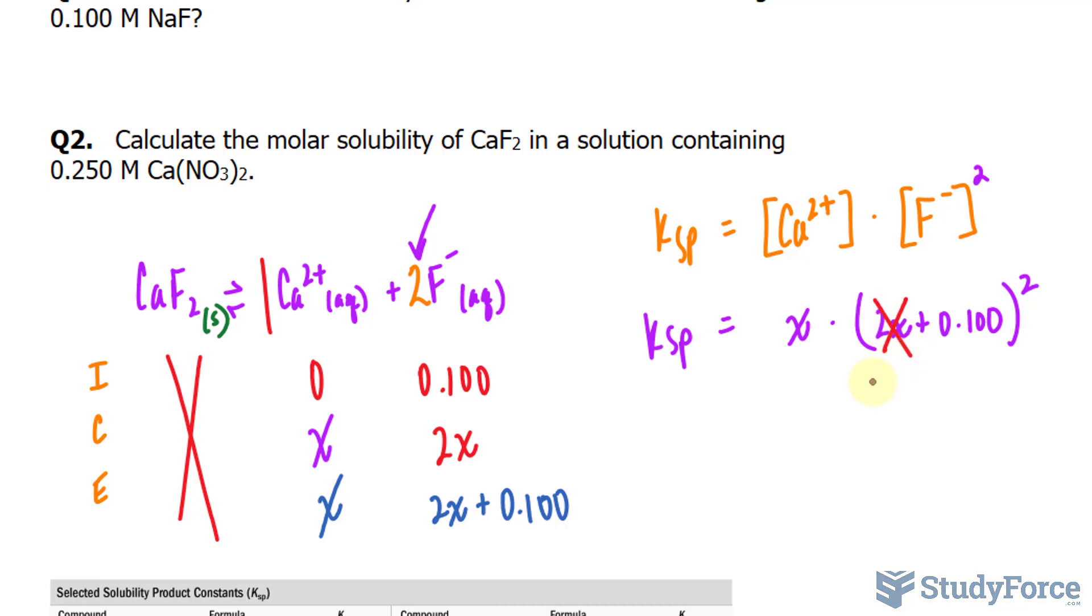Therefore, we can make the assumption that 2X doesn't need to be included here. And by removing it, it will still be as accurate. So once again, you can only make this approximation if Ksp is small, which you're going to find out it is once we located it in the table below. And if it's small, you can make the approximation that the 2X is much less than 0.100 and will therefore be insignificant as mentioned before.